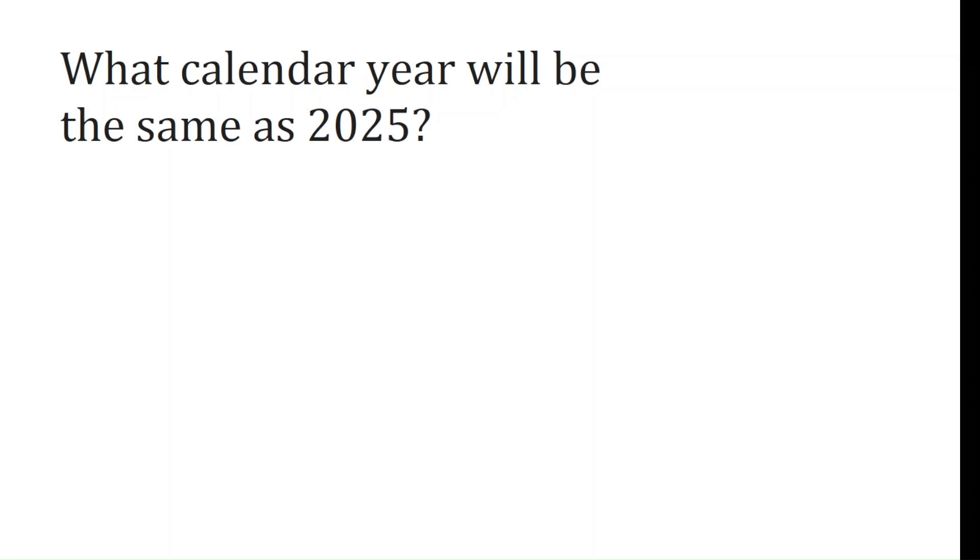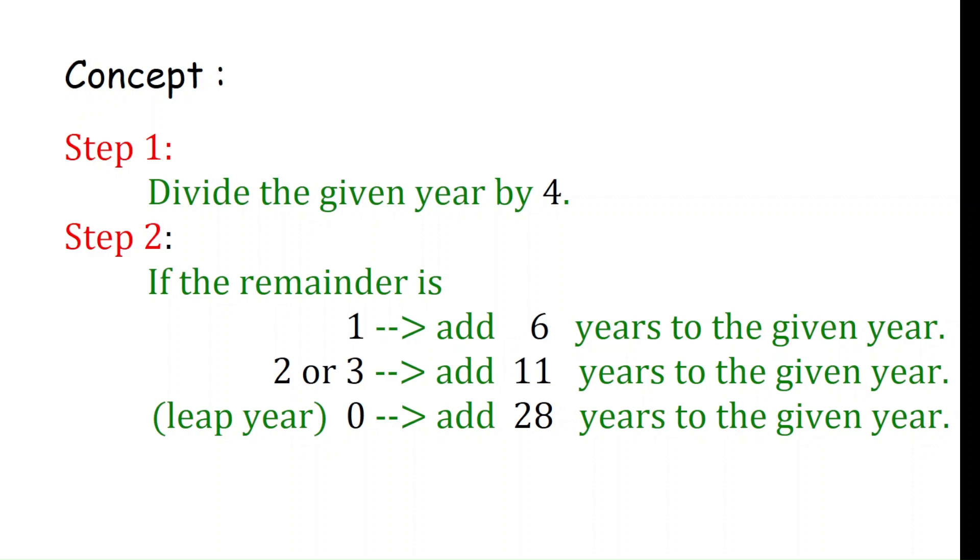Here I am using the concept. First, divide the given year by 4. If the remainder is 1, add 6 years. If the remainder is 2 or 3, add 11 years. If it is a leap year, the remainder is 0, so add 28 years. Then you will find the answer.